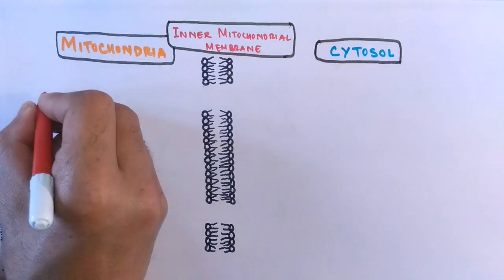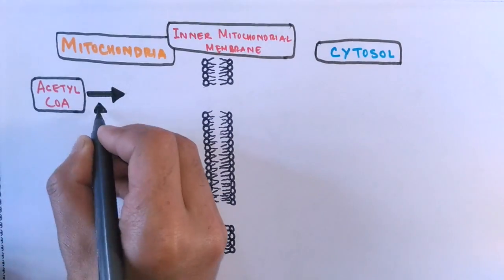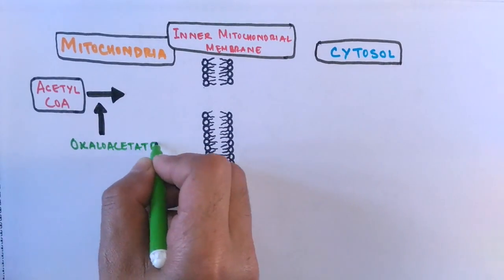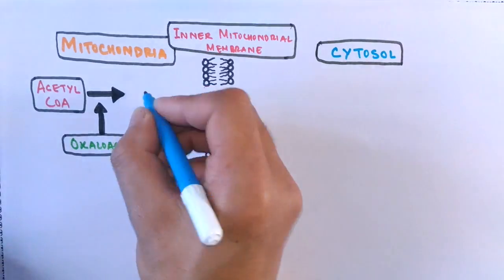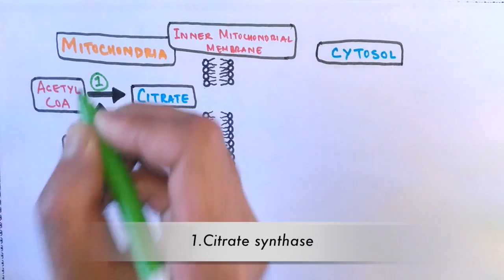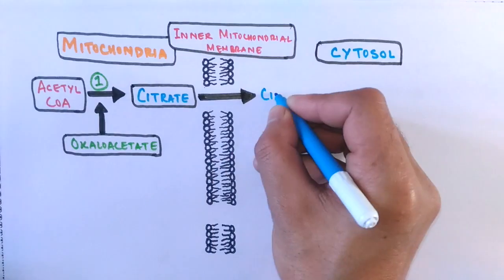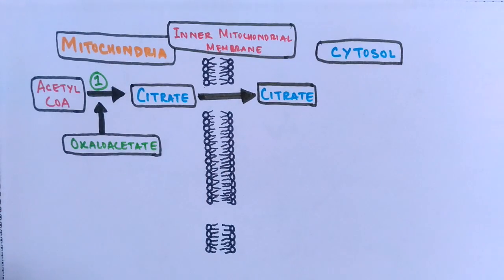Acetyl coenzyme A is not able to cross the inner mitochondrial membrane. So an oxaloacetate molecule combines with acetyl CoA to form a molecule called citrate, a reaction catalyzed by citrate synthase. This citrate is able to cross the membrane easily via the tricarboxylate carrier protein, in exchange for a malate molecule that enters the mitochondria. So as citrate exits into the cytosol, malate from the cytosol enters the mitochondrial matrix.